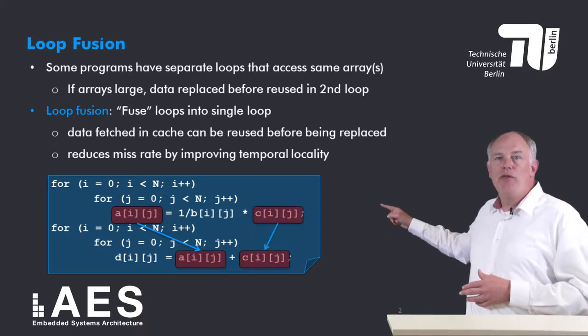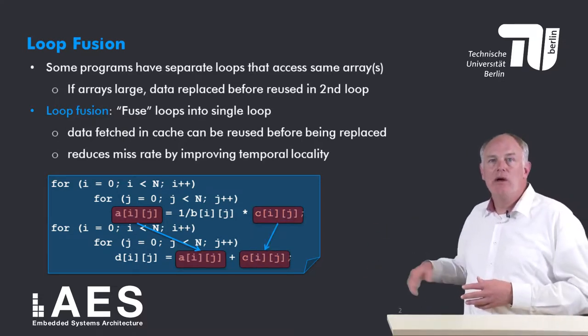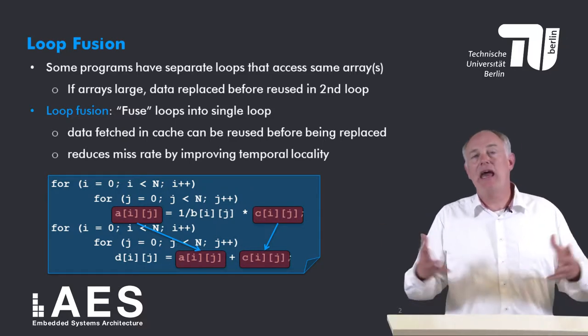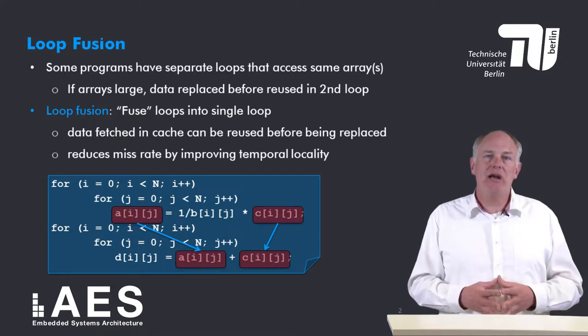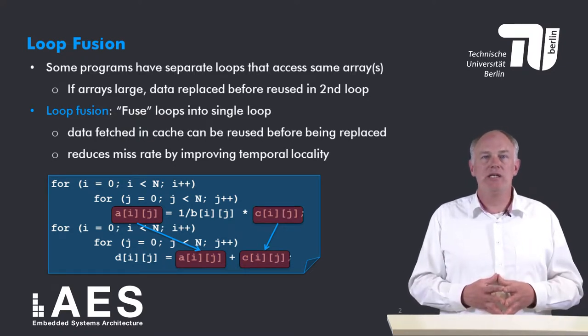Similarly, both the first and the second loop read C[i][j]. Again, if the matrices are too large to keep in cache, C[i][j] will be replaced before the second loop reuses it.